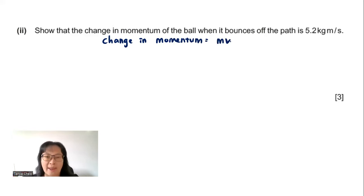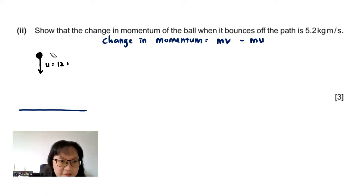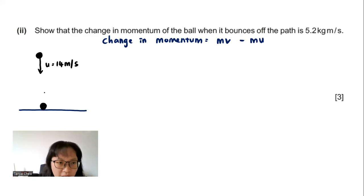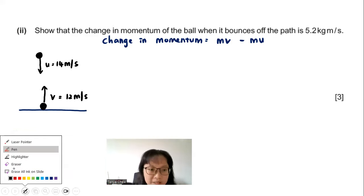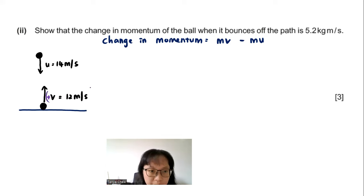I'll draw the whole process. The ball falls at 14 m/s and bounces up at 12 m/s. Momentum is a vector quantity, so direction matters. I'll take the upward direction as positive, so downward is negative. Mass is a scalar, so direction only applies to velocity.